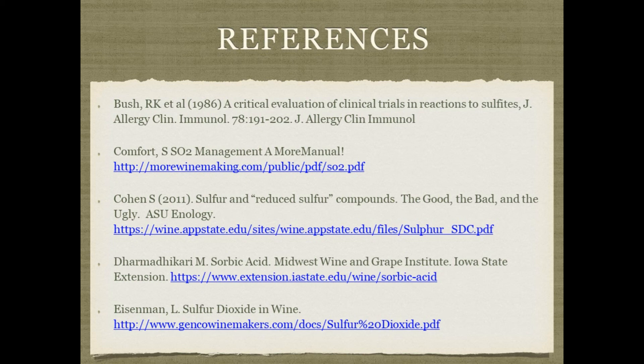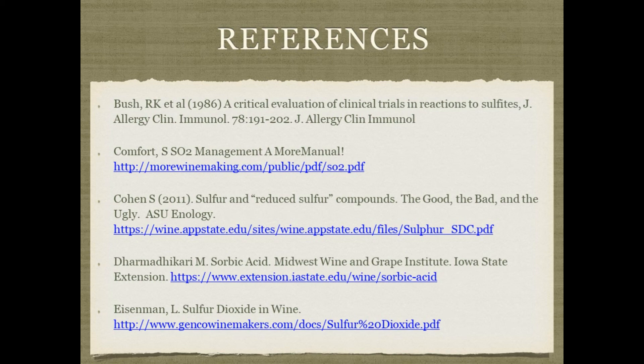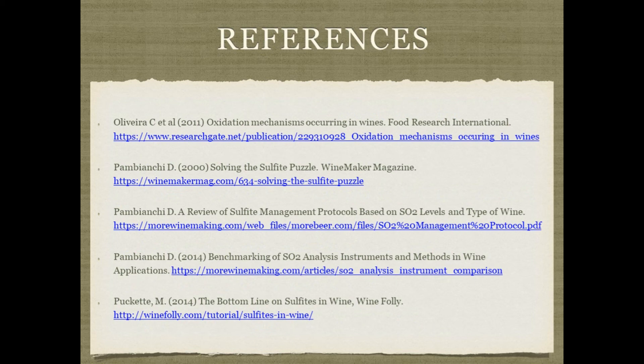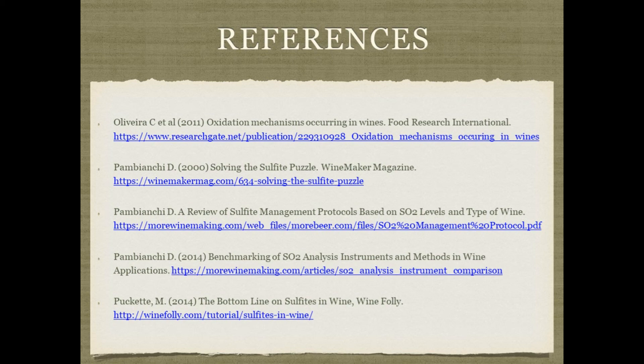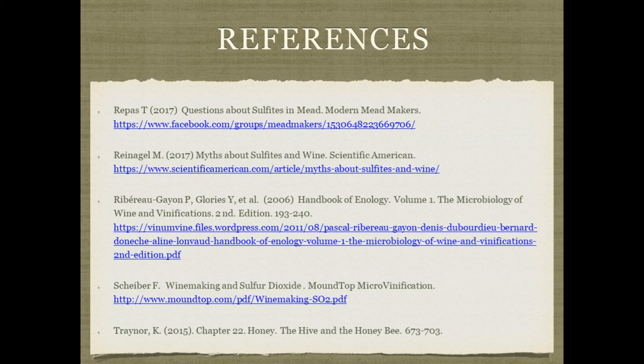Here are some references I used in this presentation. I encourage you to look them up yourself and make up your own mind. PDF copies of this presentation will also be available for your future reference and learning. That's the end of our video about sulfites and sorbate for preserving and stabilizing mead. If you found it helpful, please check out the rest of our videos on The Art and Science of Mead YouTube channel. Thank you.